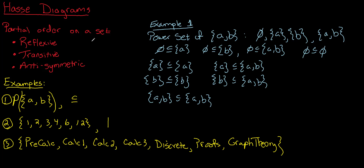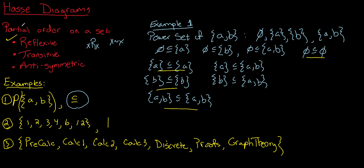Reflexive means that every element relates to itself — X relates to X, sometimes written as X twiddle X. In this case the relation is subset containment, so going through our elements: does every element relate to itself? Yes, yes, yes, yes — every element relates to itself using subset containment. So we are working with a reflexive relation.